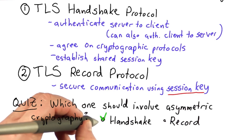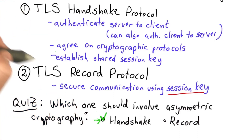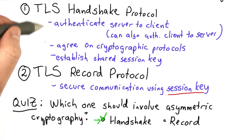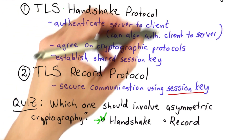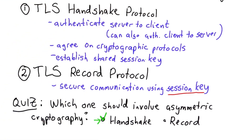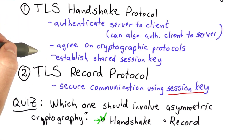The answer is the Handshake protocol. That needs to use asymmetric cryptography to do authentication. If we want to do authentication without starting from a shared key, which if we're talking about a web browser and a client we don't have, that always requires some kind of asymmetric cryptography. So that's what the Handshake protocol uses.